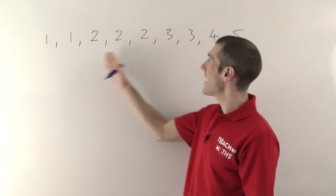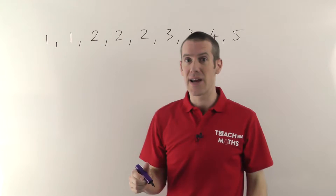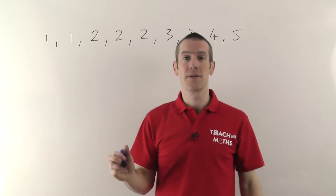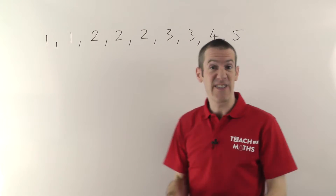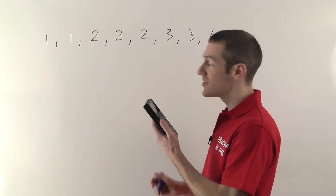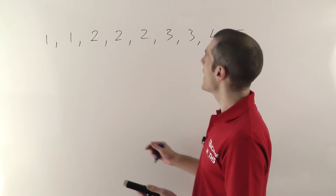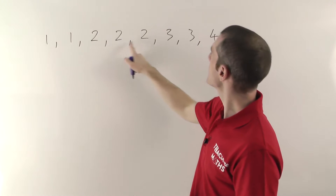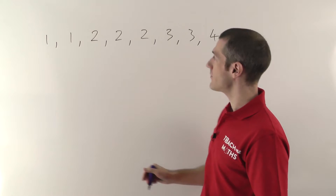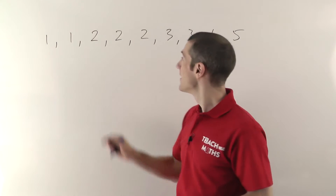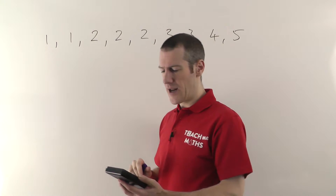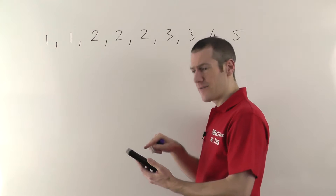To work out the mean of this list of numbers, you simply add them all up and divide by however many numbers there are. In this case we've got nine numbers, so you add them all up and divide by nine. Adding them up: 2, 4, 6, 8, 11, 14, 18, 23 — you get twenty-three. There are nine of them, so you do 23 divided by 9.